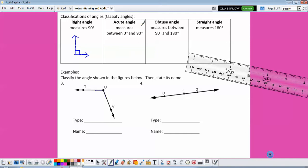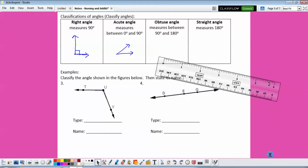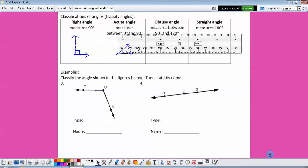Now an acute angle measures between 0 degrees and 90 degrees, so anything like this. So if I were to check it, I would see that that angle is smaller than the corner.